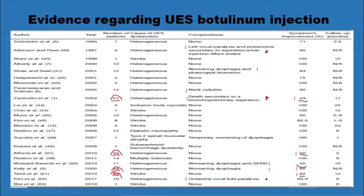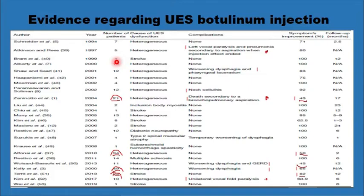A summary table of Botox injection outcomes in cricopharyngeal dysfunction clearly shows that in large series with more than 20 patients, success rates are between 40% and 60%. 100% success rates appear only in smaller reports, sometimes with only a single patient. The table also shows that botulinum toxin injection is not without risks: some patients had recurrent laryngeal nerve paralysis, some had worsening of symptoms, and in some cases patients died due to aspiration after Botox injection.